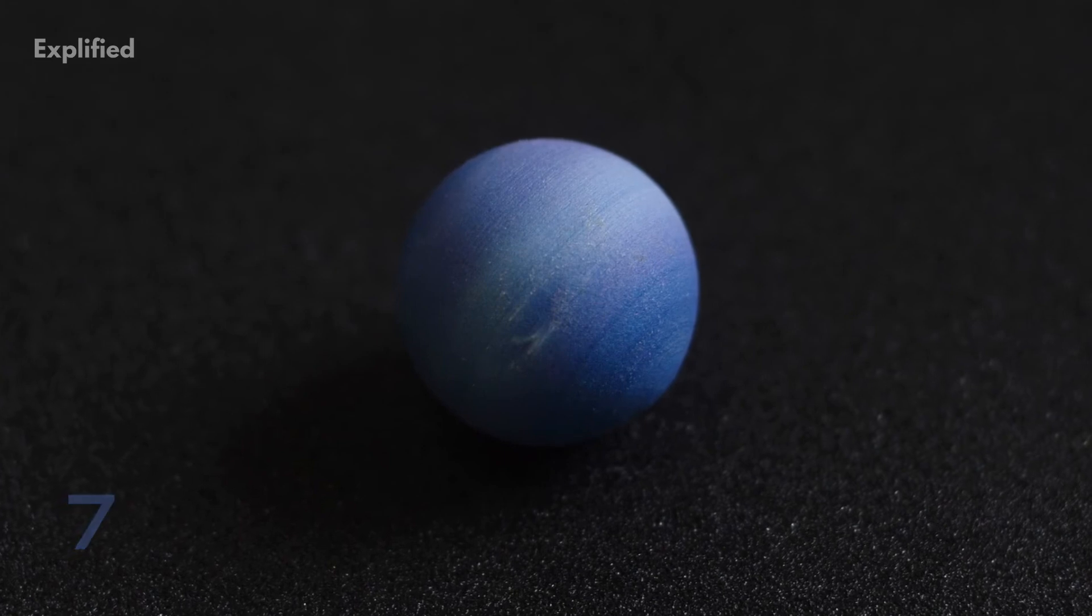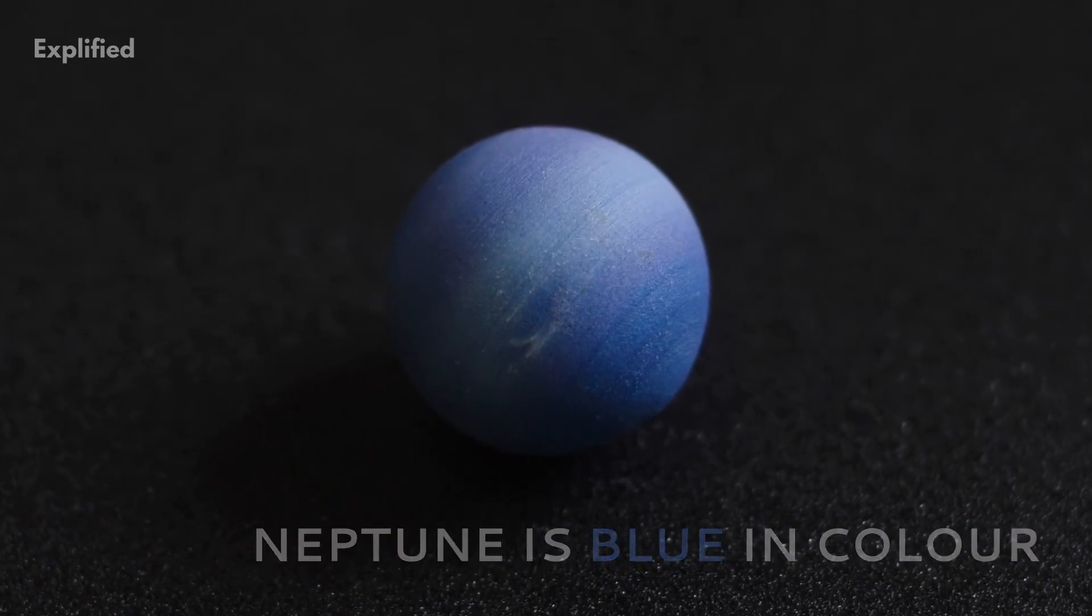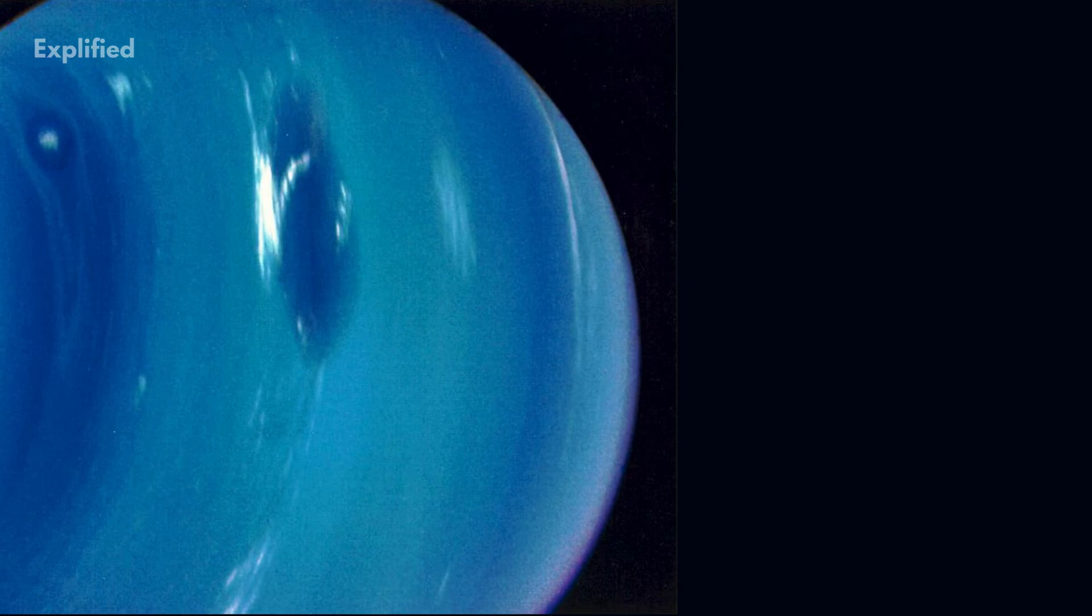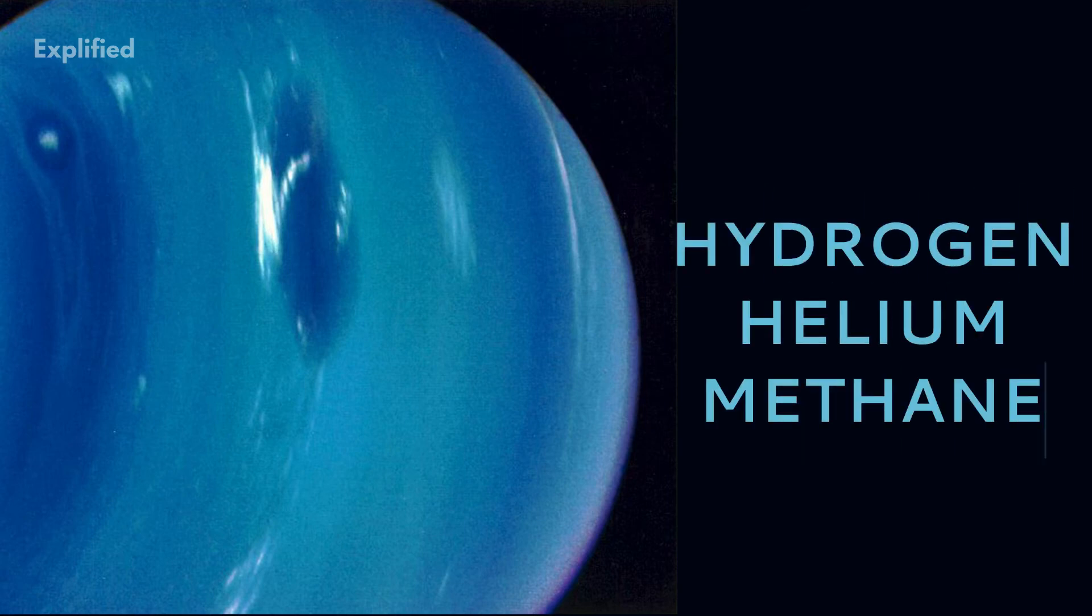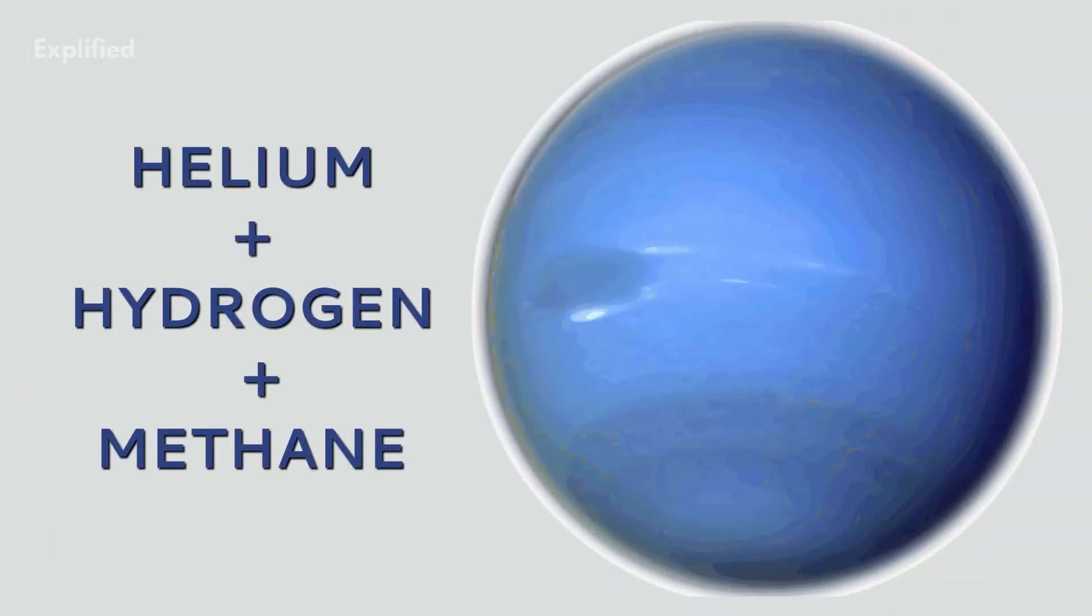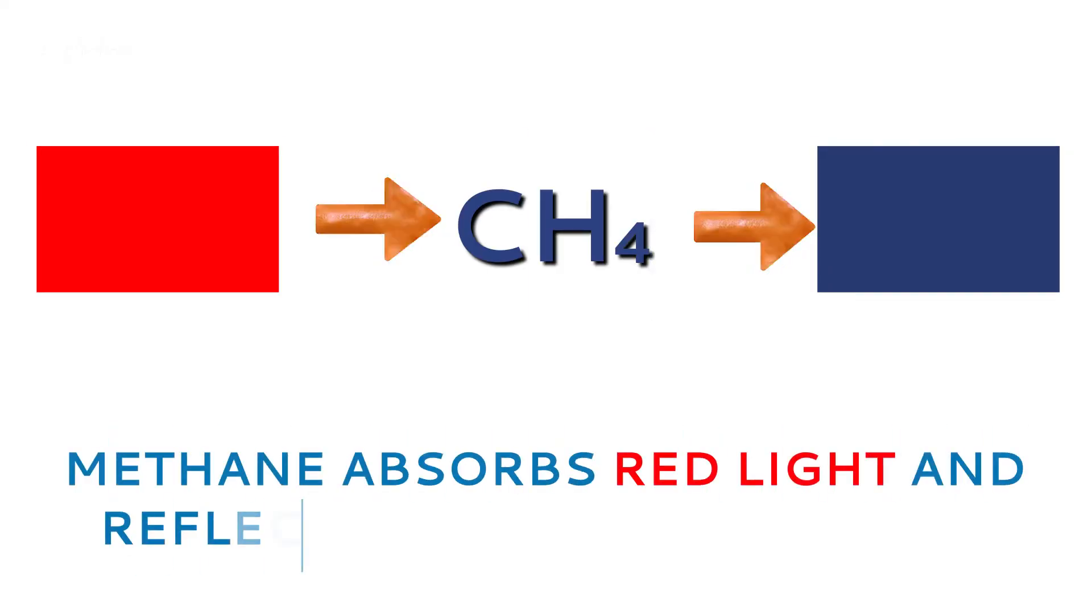Number 7. Neptune is blue in color. Neptune's atmosphere is made of hydrogen, helium and methane. These give the planet its blue color. This is especially because of methane that absorbs red light and reflects blue light outward.